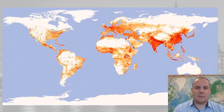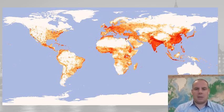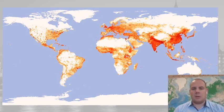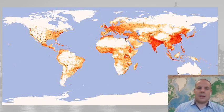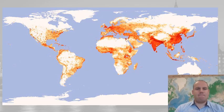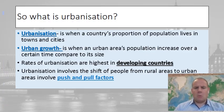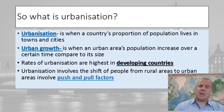This is a world map showing population distribution, and we can start seeing patterns of where people are living — particularly in Asia, India, China, and parts of Indonesia, which have very heavily urbanized centers. That's going to cause some problems, which we'll look at later when we start looking at mega cities.